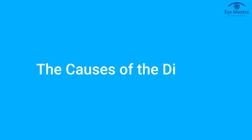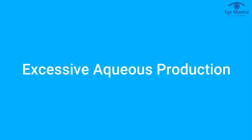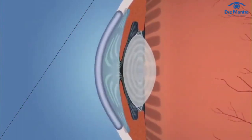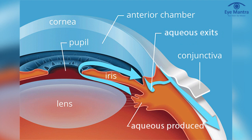Now let us move on to the causes of the disease. Factors that cause or are associated with ocular hypertension are virtually the same as the causes of glaucoma. These include excessive aqueous production. The aqueous humor is a clear fluid produced in the eye by the ciliary body, a structure located behind the iris. The aqueous flows through the pupil and fills the anterior chamber of the eye — the space between the iris and the cornea. If the aqueous forms faster than it can drain out, the pressure inside the eye increases, causing ocular hypertension.